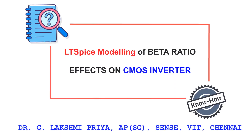Welcome all to the next session on the Know-How series. This video is about the second part of the DC transfer characteristics of CMOS inverter, wherein we are going to analyze the switching threshold and the beta ratio effects on the CMOS inverter. Finally, we will simulate the CMOS inverter using LTSpice and understand the DC transfer characteristics corresponding to the beta ratio effects.